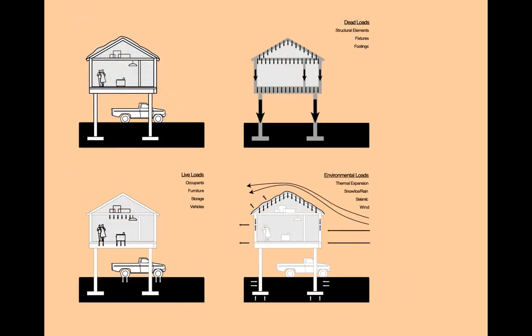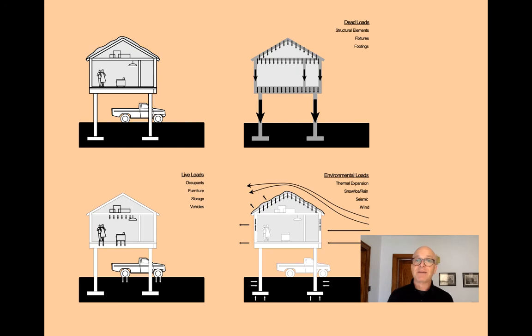We're going to talk a lot about loads and converting them into mathematical entities we can calculate. We have a few different types. Live loads are anything that can be moved around - people, furniture, anything being stored, vehicles, anything that moves around in a building. We have ways of estimating these for typical functions. Dead loads are the structure's own self-weight and anything fixed to the building: cladding, partitions, plumbing fixtures, footings for foundations - all count as dead loads.